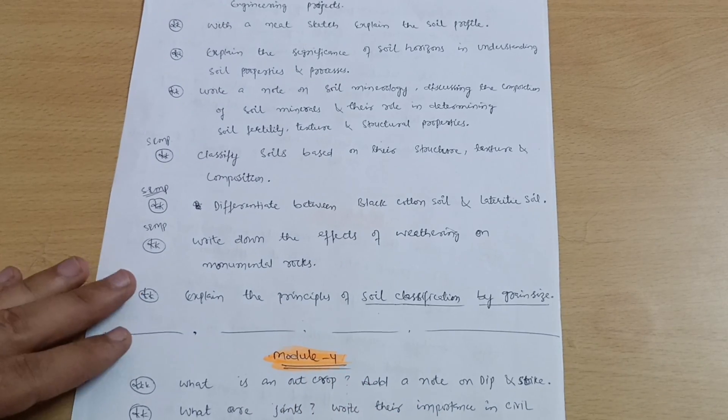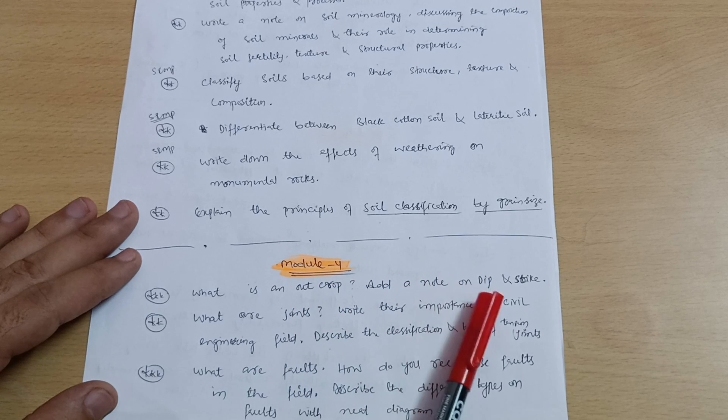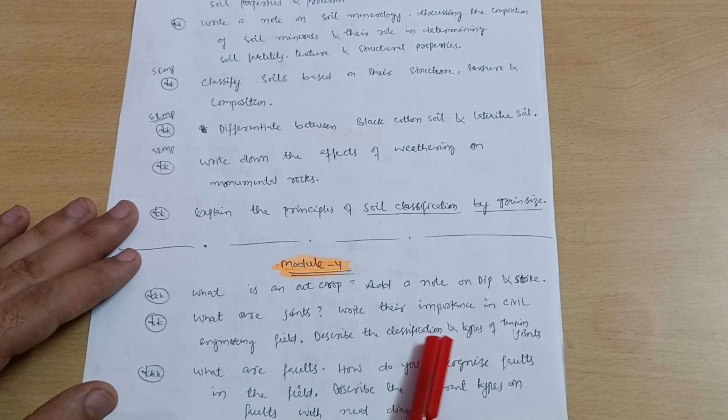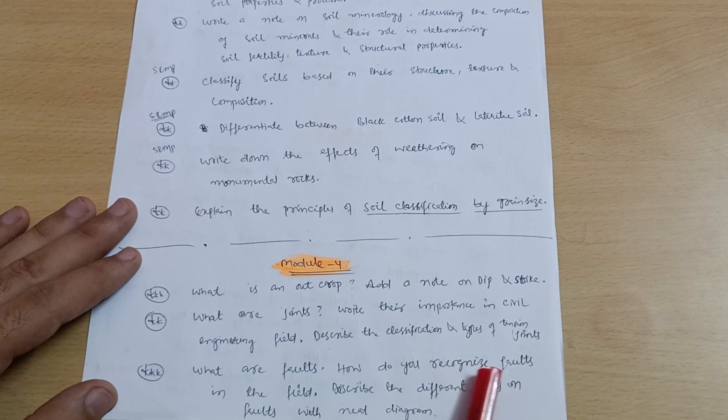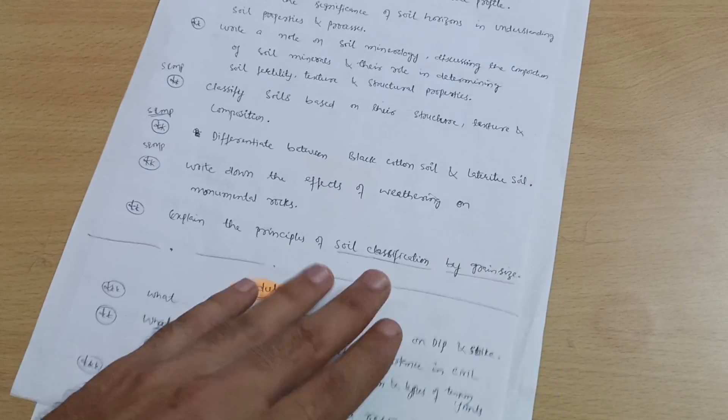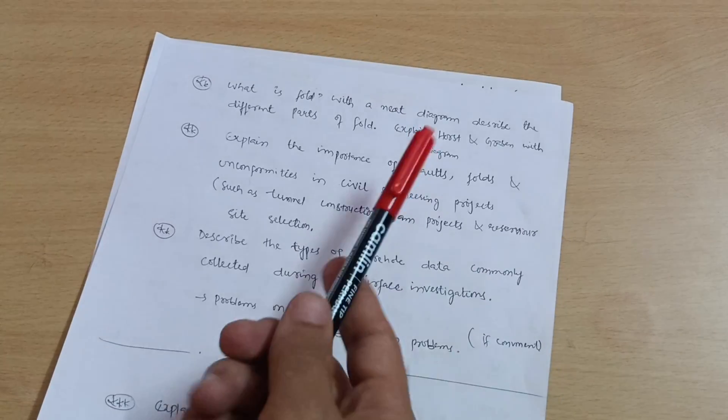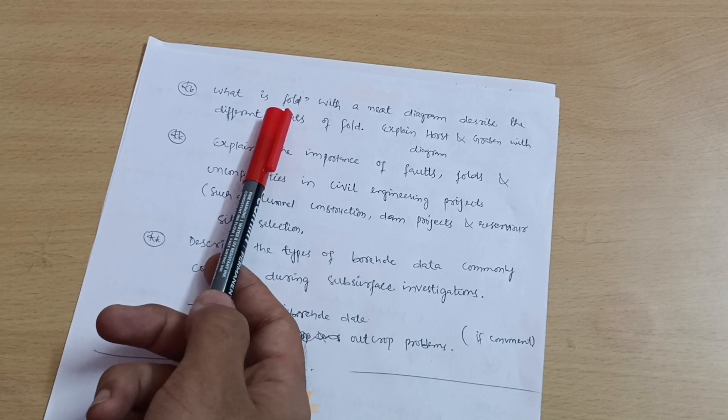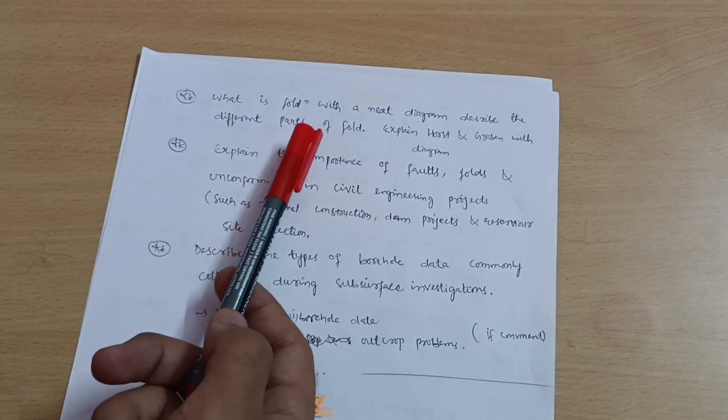Next modules, there are some problems also, that is why I don't count these modules in the passing part. What is an outcrop? Add a note on dip and strike. What are joints? Write their importance in civil engineering field. Describe the classification and types of tension joints. What are the faults? How do you recognize faults in the field? Describe the different types of faults with neat diagram. Next, with the fault part also, they can also ask explain horst and graben with diagram, and also what is fold with neat diagram? Describe the different parts of fold.